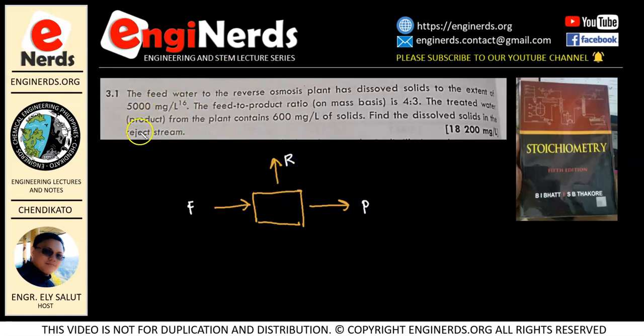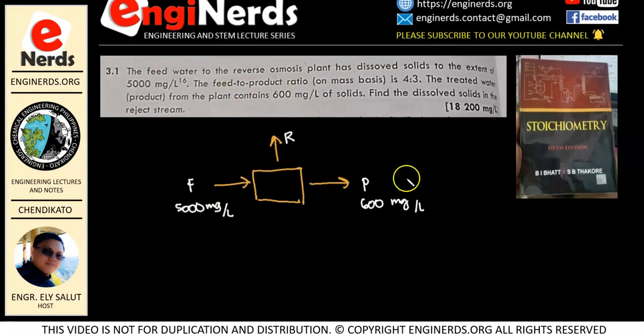And then given are our dissolved solid content in each stream, except for our reject because this is what we're going to find out now. Okay, for our feed, we have 5,000 mg per liter. For our product, we have 600 mg per liter. Okay, so what we're looking for is for the reject stream. Now, another given is our feed to product ratio. Okay, so we have feed to product ratio which is 4 over 3.